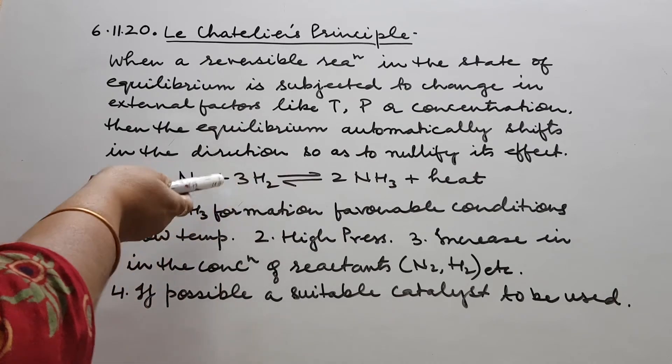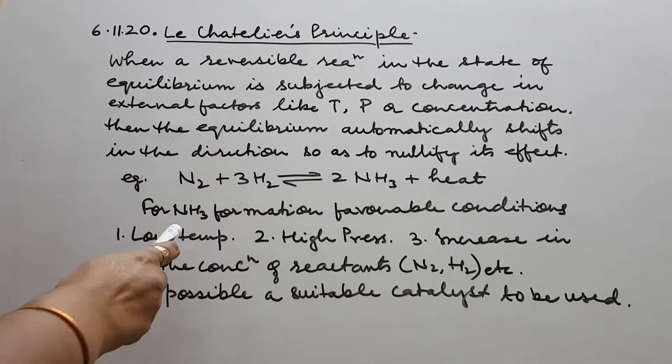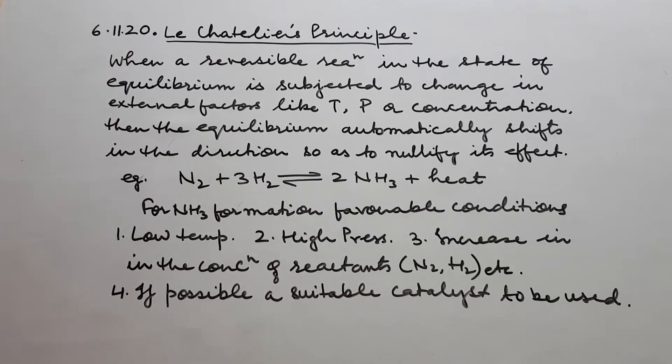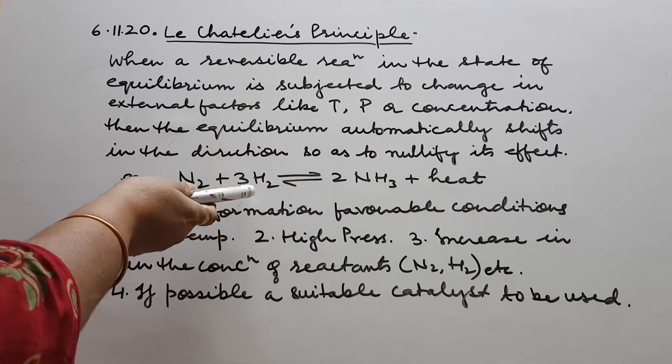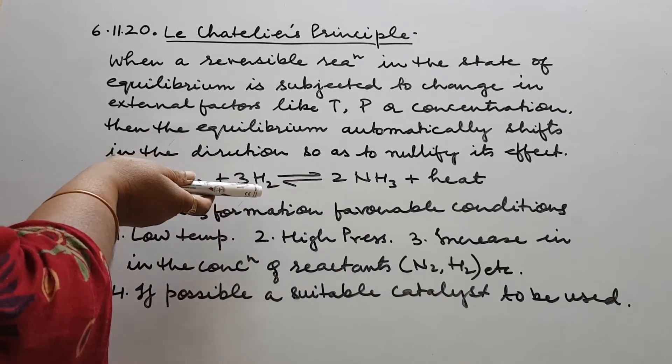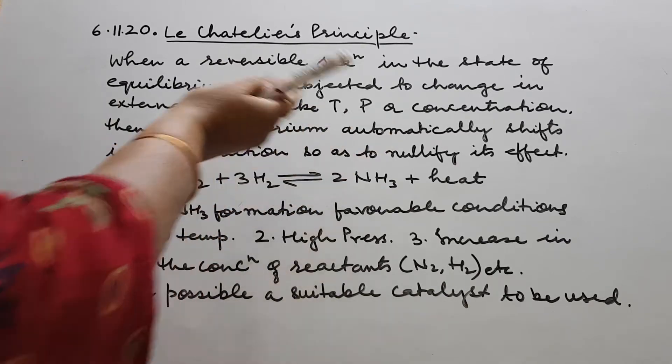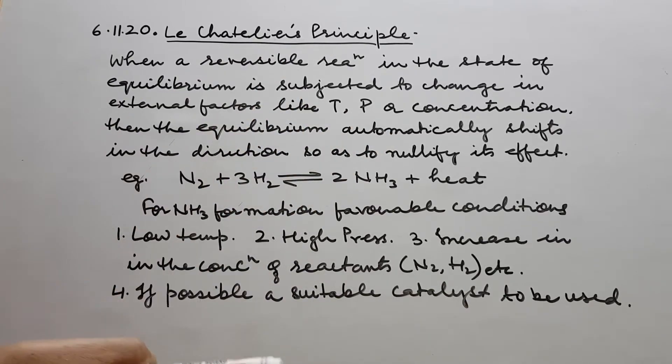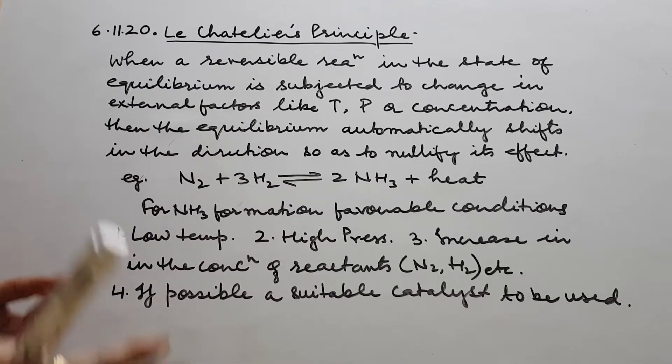First is, because this reaction is throwing heat, giving out heat, so naturally low temperature for suitable condition. Number 2, since I see that this is moving, it is going with decrease in volume. The reaction is proceeding with a decrease in volume. So pressure should be increased. When you increase pressure, volume decreases and in turn the concentration increases.